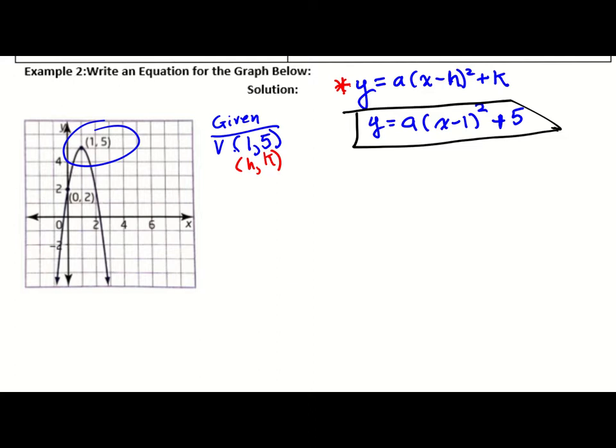In order to do this properly, we're going to have to use a point that is not the vertex from the parabola. That point that we see here that we can use is the point 0, 2.